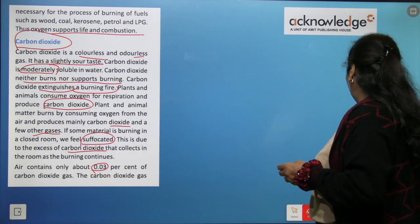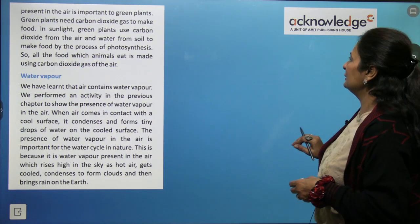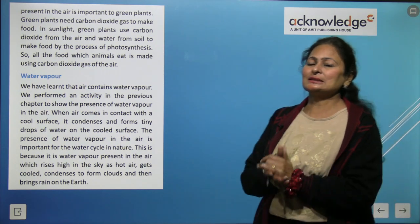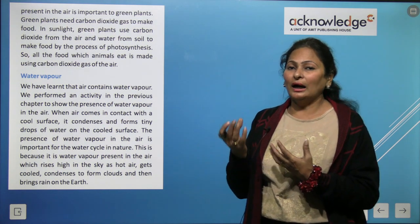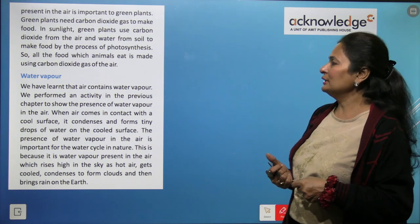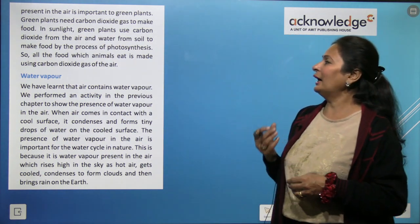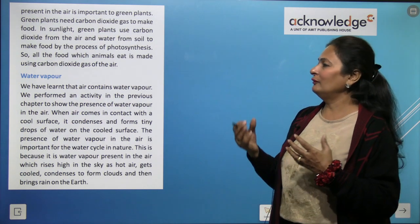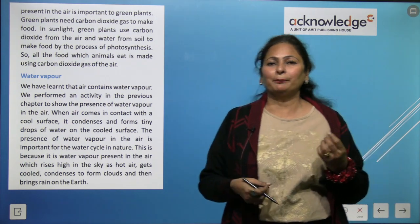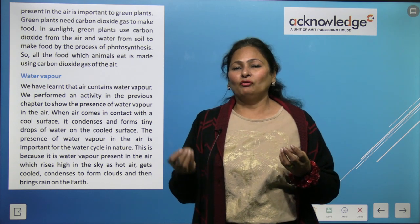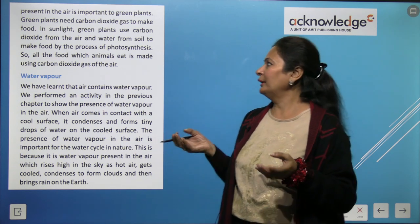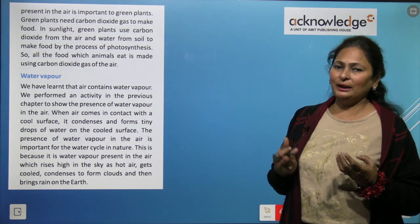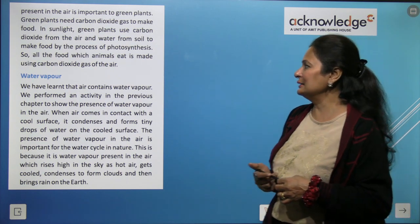Air contains only about 0.03% of carbon dioxide gas. This carbon dioxide present in the air is important for green plants, because photosynthesis requires carbon dioxide. Green plants need carbon dioxide gas to make food in sunlight — food is made using water, sunlight, chlorophyll, and carbon dioxide.